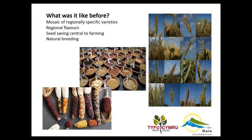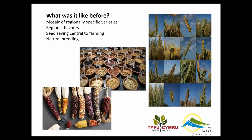What was it like before that 100-year loss? We had a mosaic of regionally specific varieties. Not only would different crops be grown around the world to suit different climates, but within countries there would have been a mosaic of regionally specific varieties. Each community would have their own varieties that they'd select year on year, resulting in diversity of crops, regional flavors, dishes, and cultural stories around seeds. Seed varieties used to be incredibly diverse.